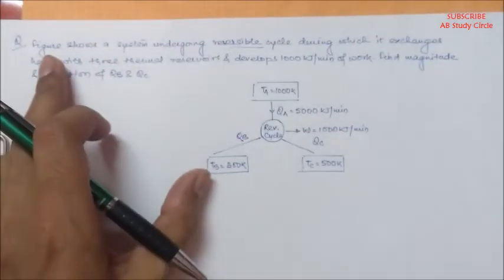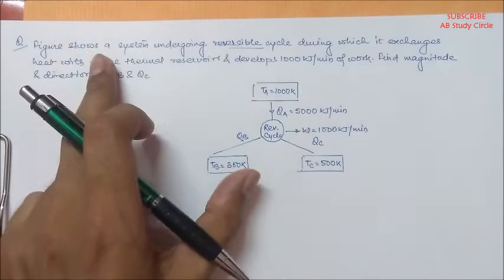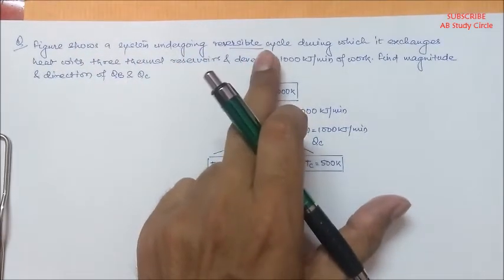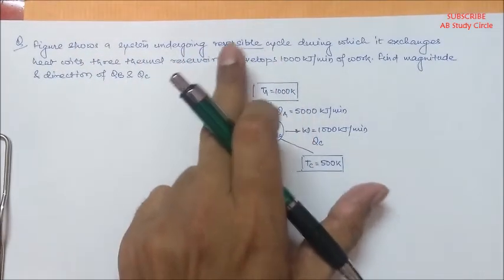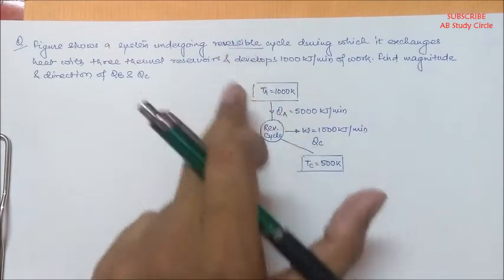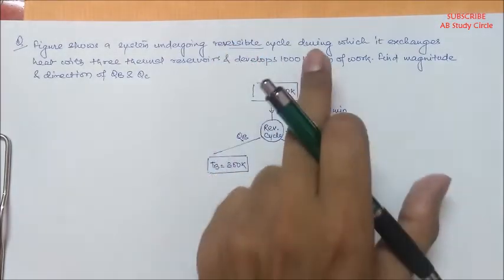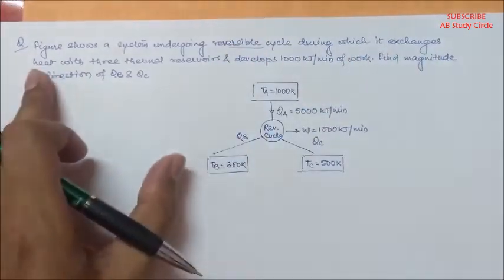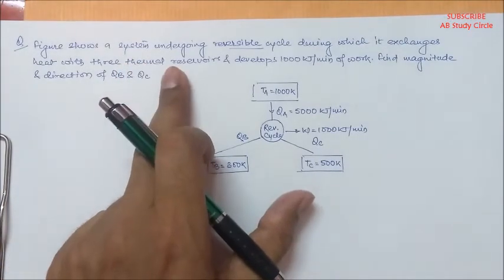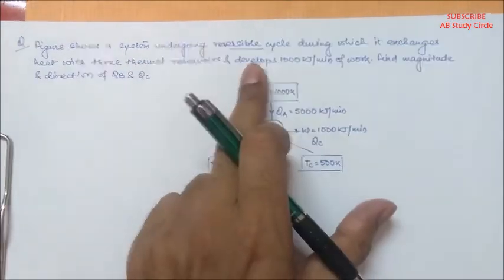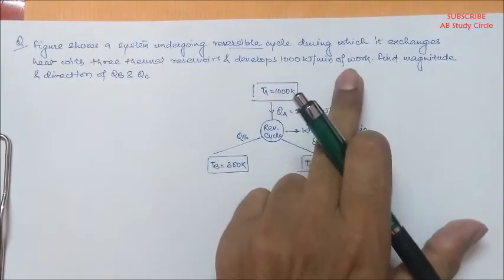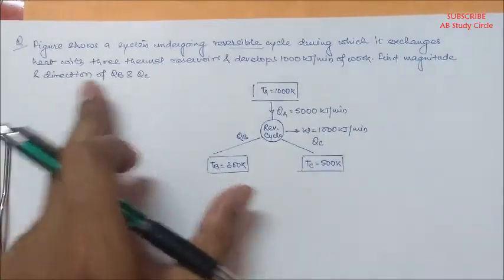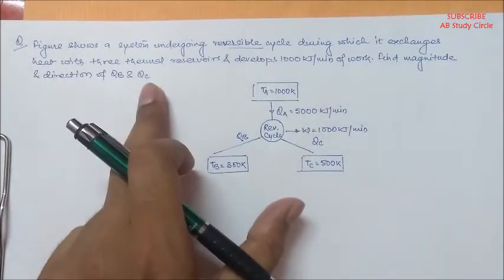The question is like this. The figure shows a system undergoing a reversible cycle — 'reversible' is underlined because this is the key to the whole question — during which it exchanges heat with three thermal reservoirs and develops 1000 kJ per minute of work. Find the magnitude and direction of QB and QC.